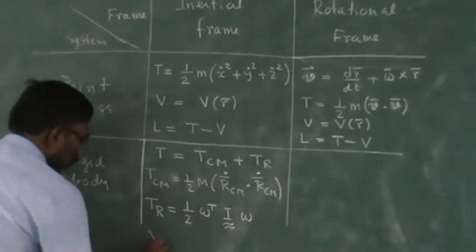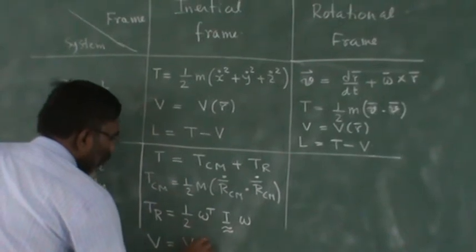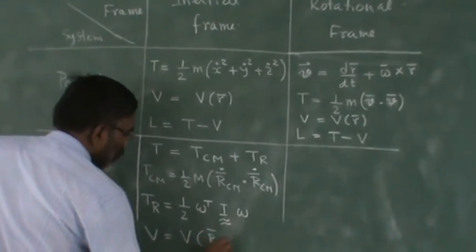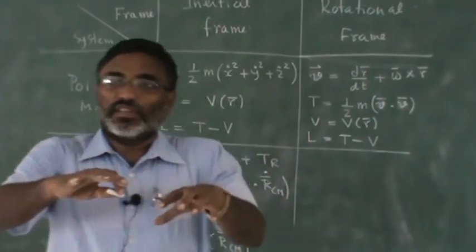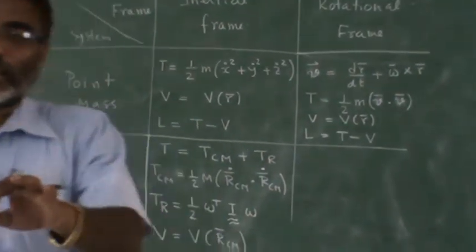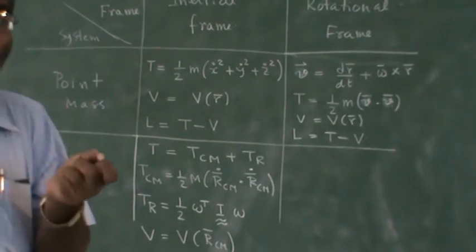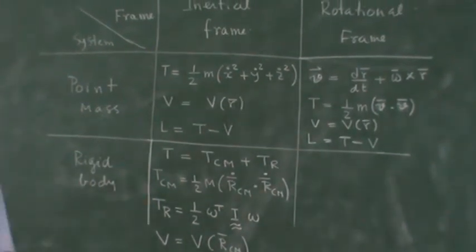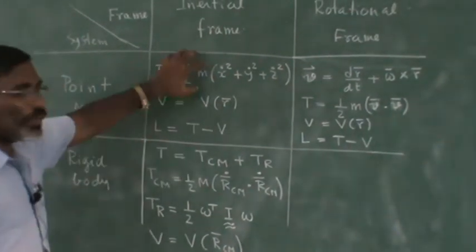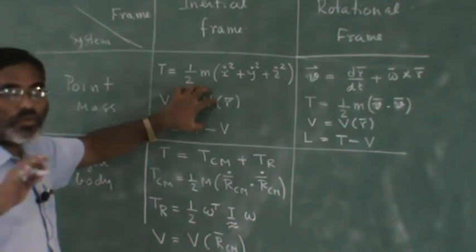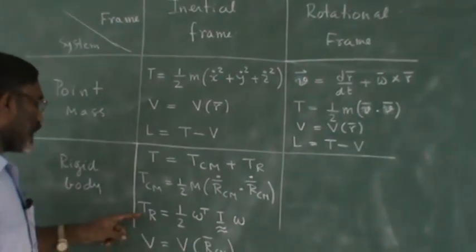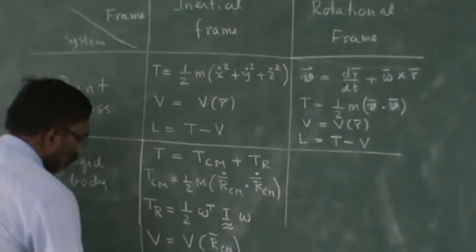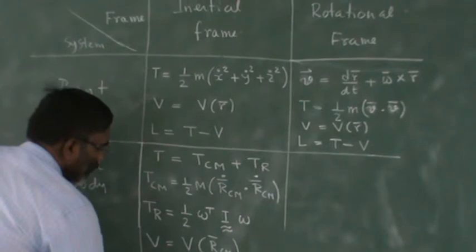Now potential energy is going to depend only on R_CM, because the external force acts as if the whole mass is concentrated in the center of mass. So in rigid body dynamics, center of mass is like a point mass. External force acts only at that point mass. An additional thing is only this rotational kinetic energy. So L is equal to T minus V.